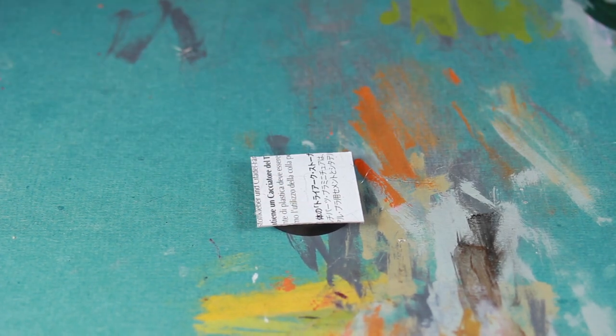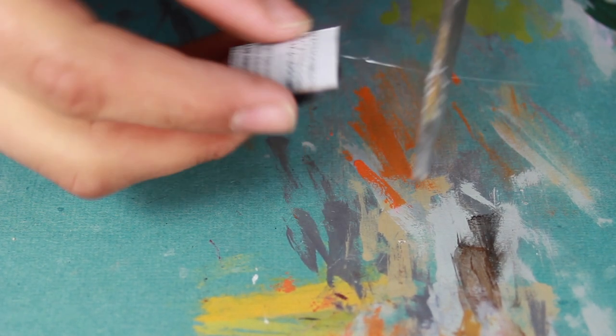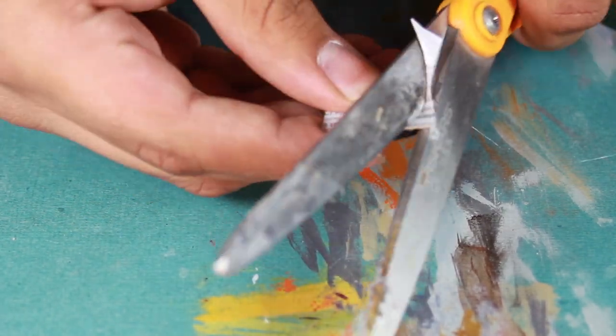The first thing I did was I took a little hot melt glue and added a little square of cereal box material. I then used a pair of scissors and cut it out to the shape of the base.